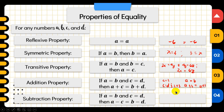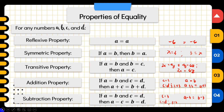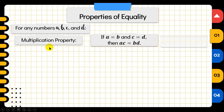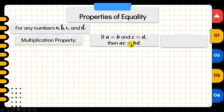Similarly, the subtraction property of equality works the same way. If the value of C equals 3 and C equals D, then we have 3 equals 3. With the subtraction property, A minus 3 should equal B minus 3 to keep them equal. Whatever you subtract from the left side, you also subtract from the right side of the equation. The multiplication property of equality works the same: whatever you multiply on the left side, multiply on the right side too.